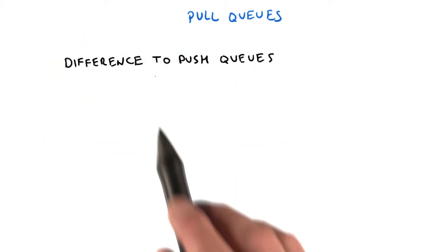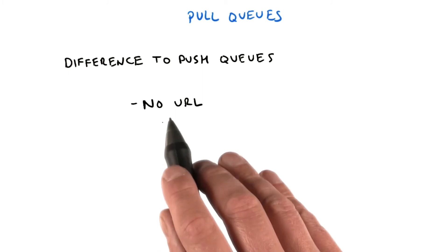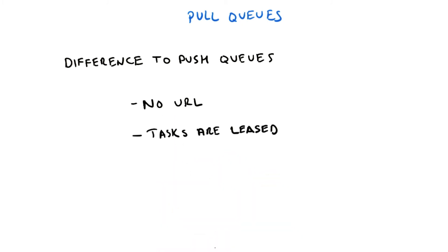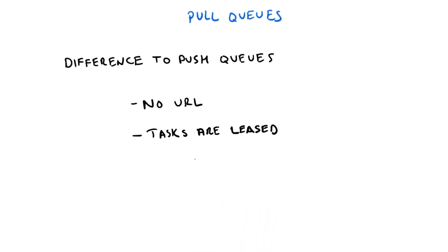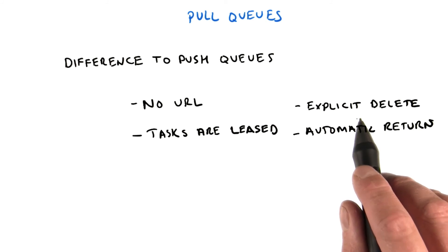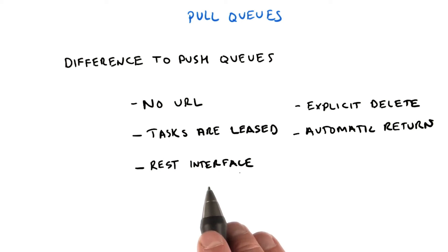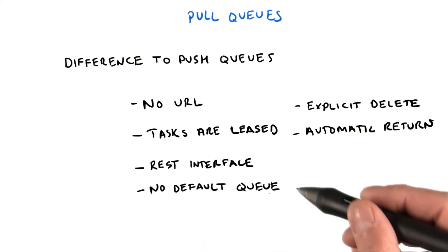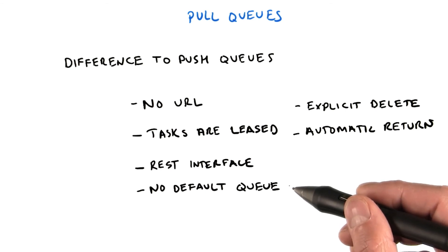If you compare pull queues to push queues, the differences are: pull queues do not have a URL, since your code is not completing the task. Each task is leased by a worker for a certain amount of time. A worker must delete the task when it's completed, otherwise it is returned when the lease expires. External workers pull the queue using a REST interface. And there is no default queue for pull queues, so you need to explicitly create them.